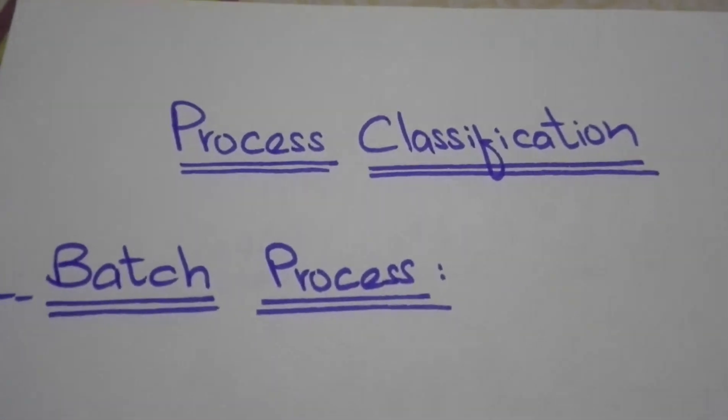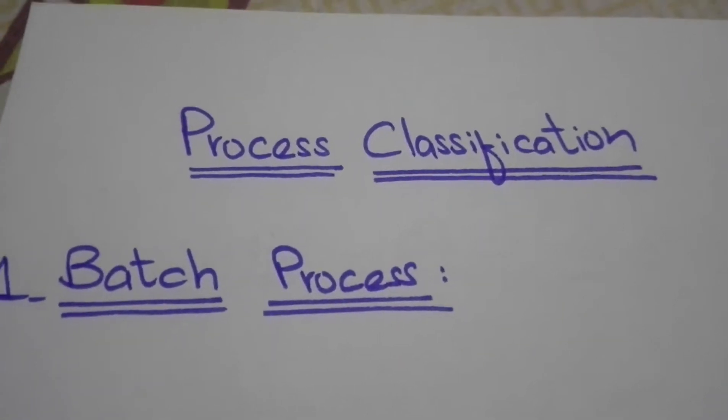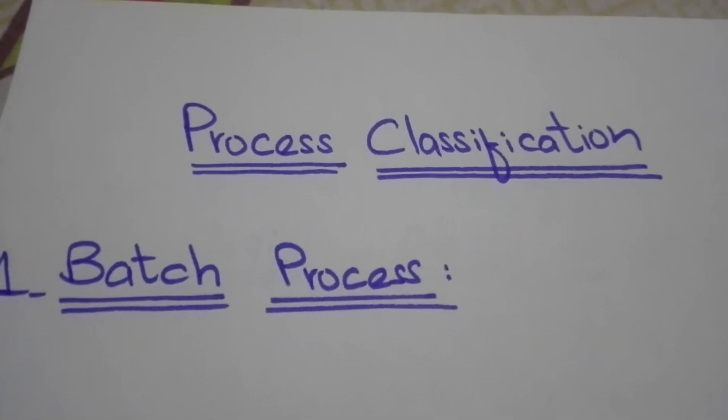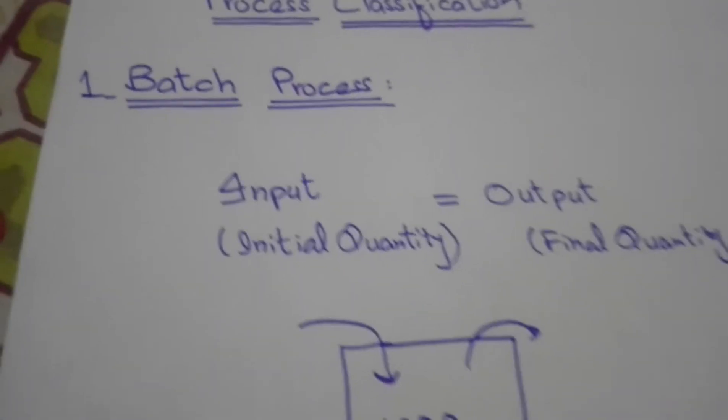Chemical processes may be classified as batch, continuous, or semi-batch, and as steady state or transient state.